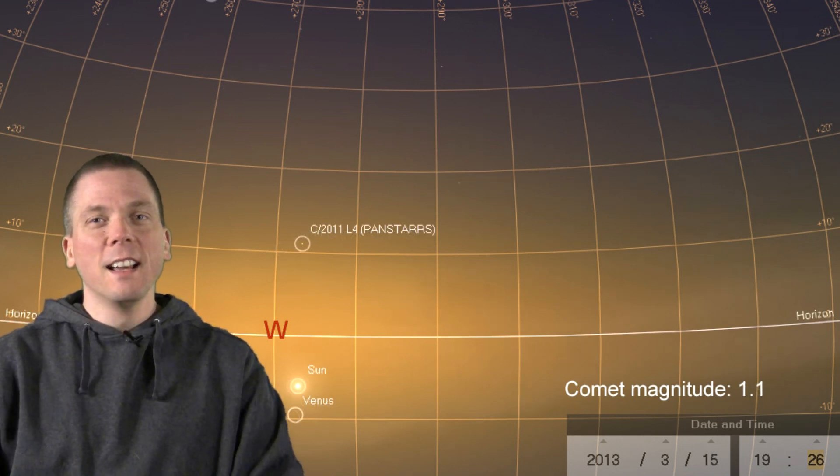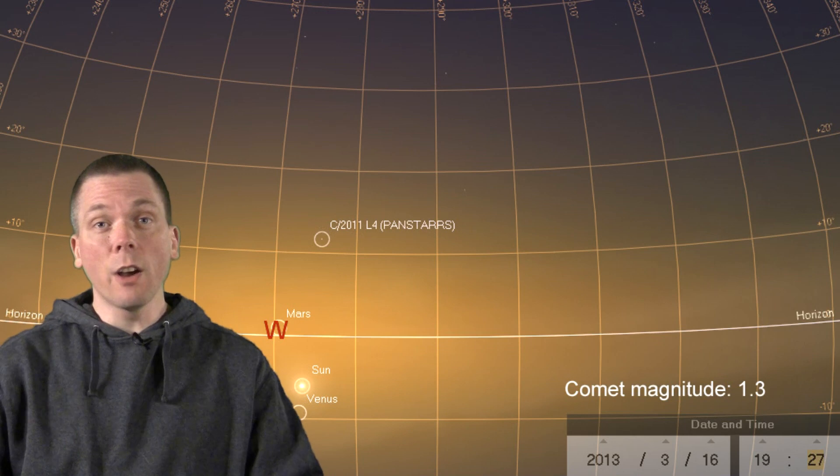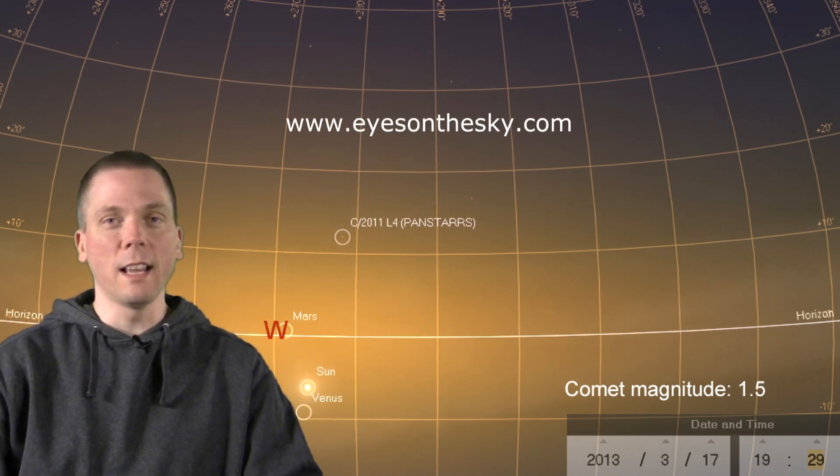By the 15th, the comet has moved directly over the sun's glow, and by the end of the weekend will have risen slightly above 10 degrees at that 30 minutes past sunset time, giving you a couple more minutes to try and view it as the twilight fades.